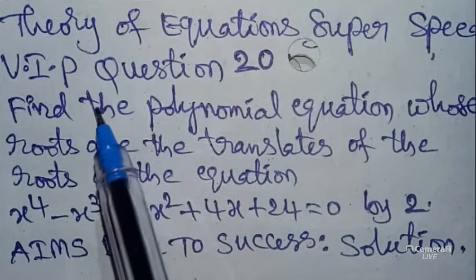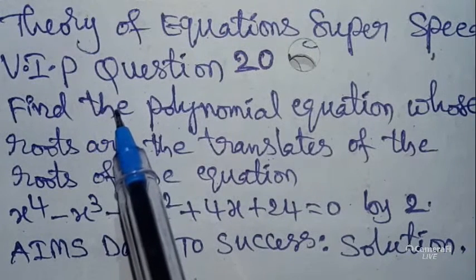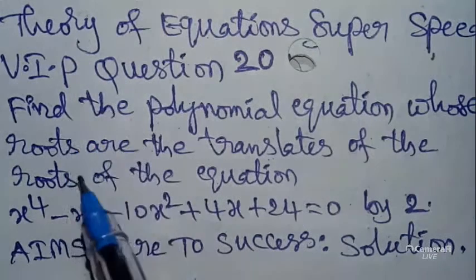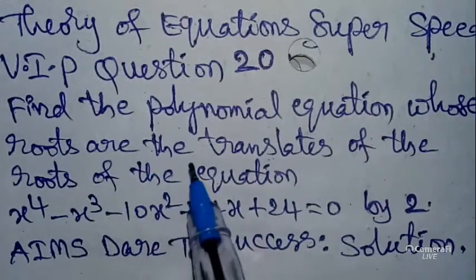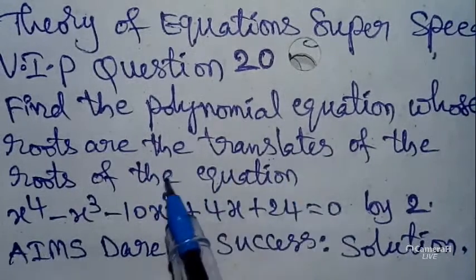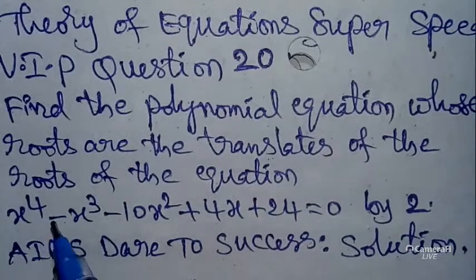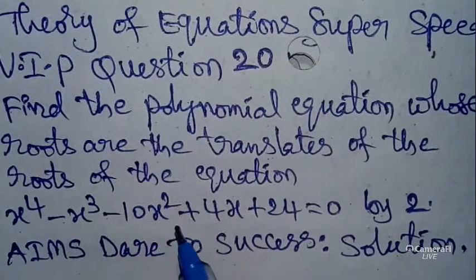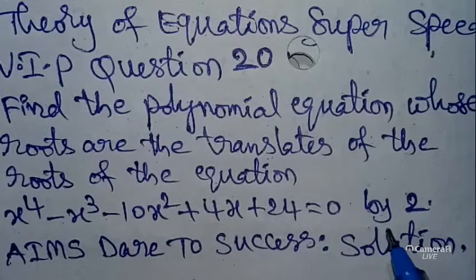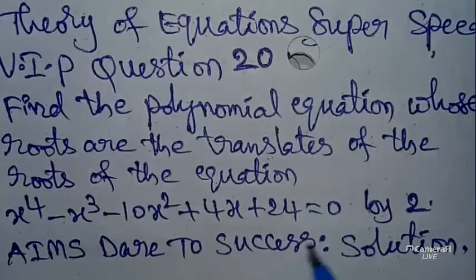Here VIP means very important previous question. VIP is always VIP. Today our question is: find the polynomial equation whose roots are the translates of the roots of this equation: x^4 - x^3 - 10x^2 + 4x + 24 = 0 by 2.